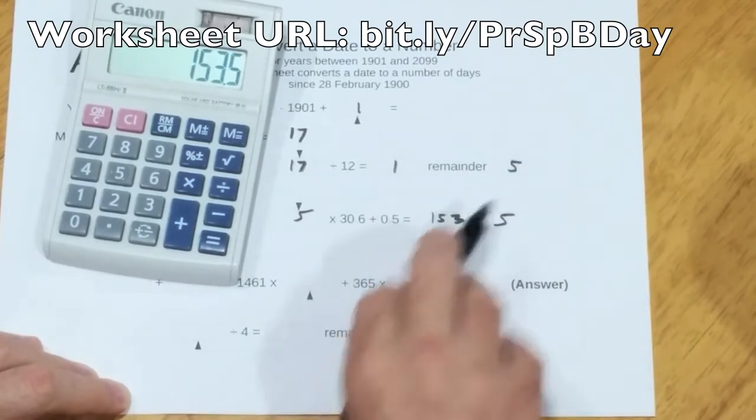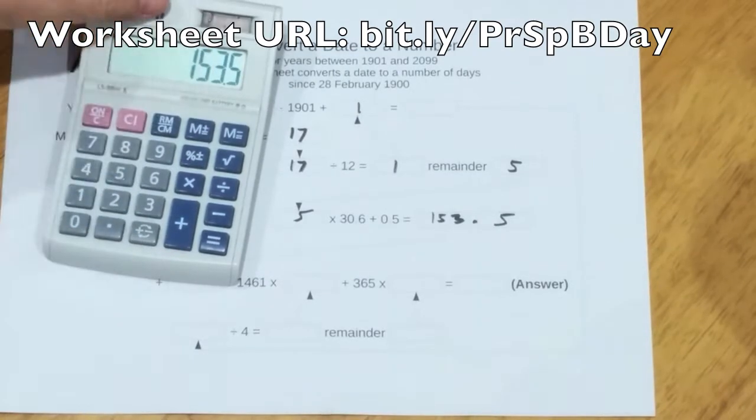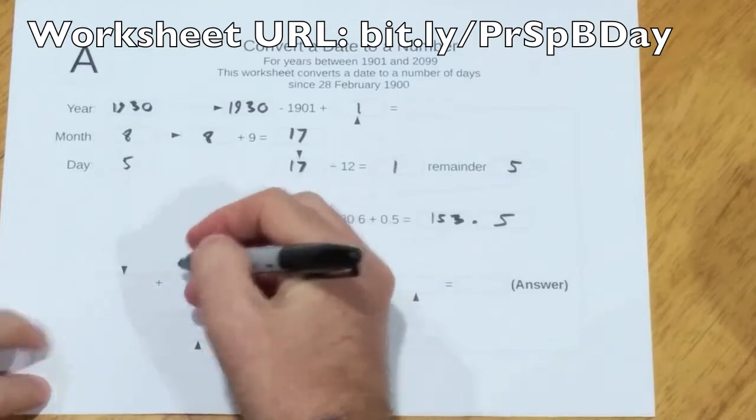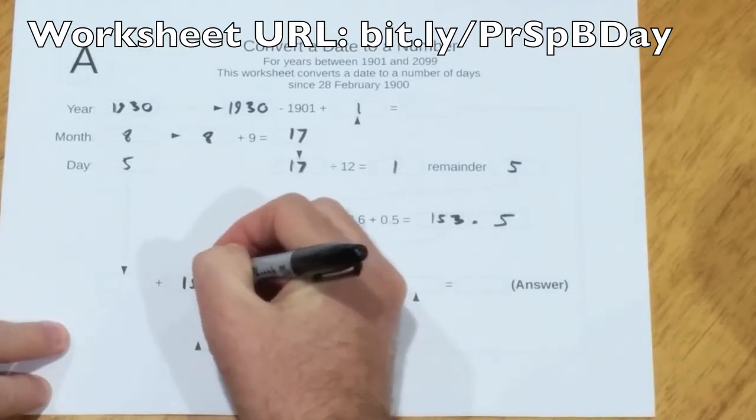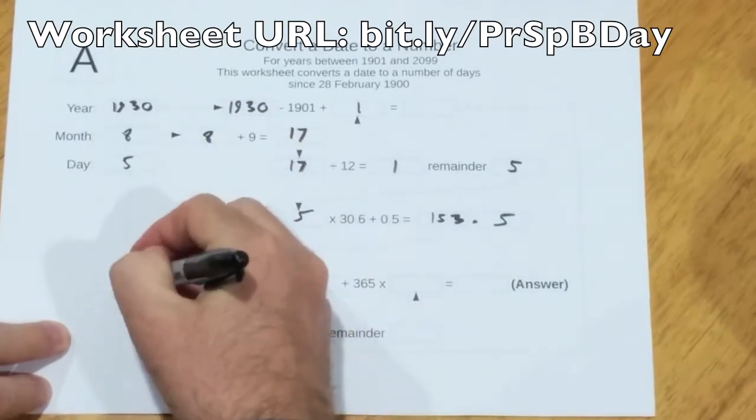So you see the decimal point there? I'll just make it bigger. Now, in this instance, it's just the 153 that gets copied down. So let's do that. 153 gets copied here. There's a 5 that's copied there. We're nearly done.